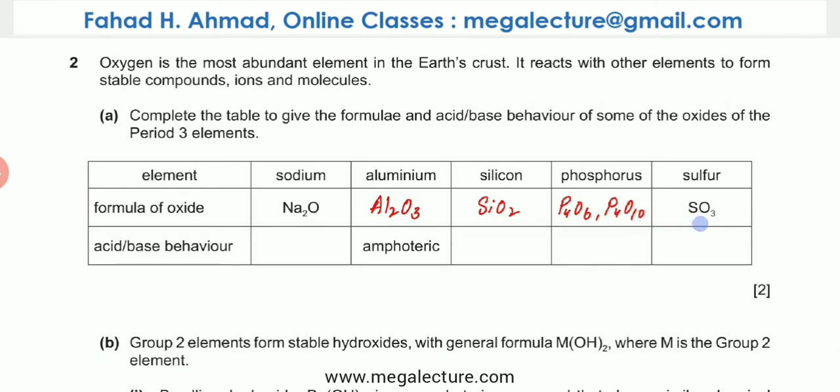You could write both of them. Similarly, sulfur also forms two oxides, SO3 as well as SO2. Now the acid-base behavior: the first one is a metal oxide, it's basic, whereas the rest are all acidic. This is weakly acidic, these are strongly acidic, and this is also acidic.